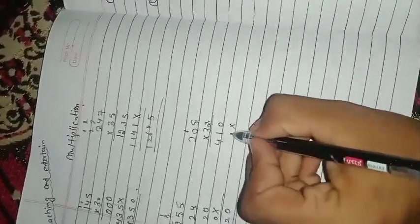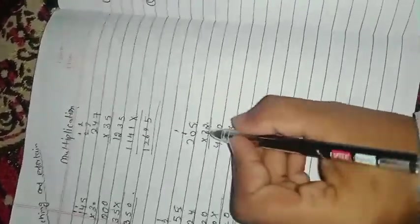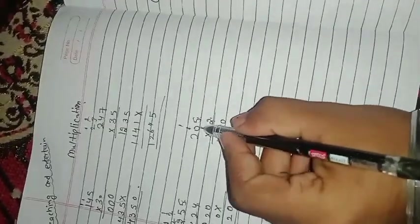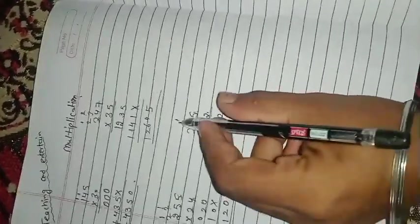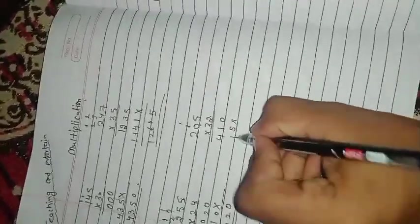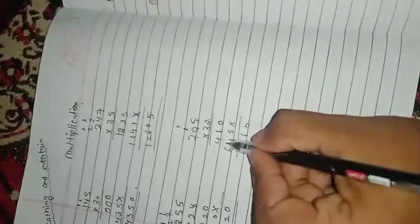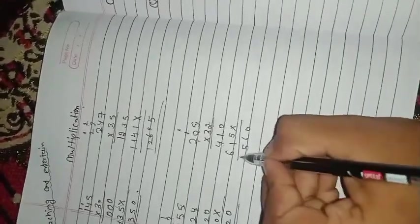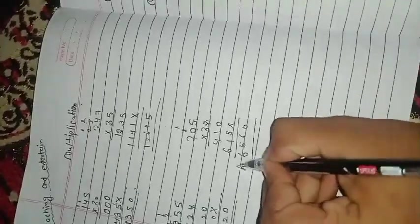Multiply by 5: 3 times 5 is 15, 5 and 1 carry. 3 times 0 is 0. Okay? We have 1 carry, right? 3 times 0 is 0, 0 plus 1 is 1. 3 times 2 is 6. Adding: 0, 5 and 1 is 6, 4 and 1 is 5, 6. This is your answer.